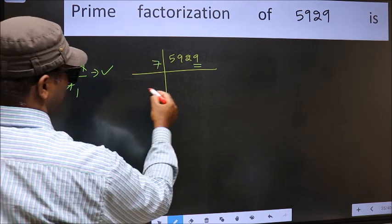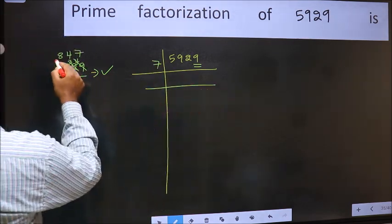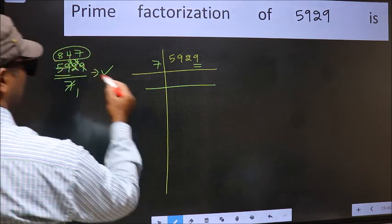So 7 here. And here we should write this number 847.